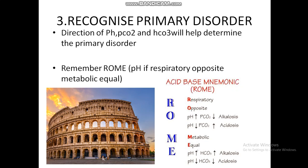In metabolic disorders, pH and HCO3 move in the same (equal) direction. If pH is high and HCO3 is high, it is metabolic alkalosis. If pH is low and HCO3 is low, it is metabolic acidosis. For example, pH 7.15 and HCO3 10 — both are low, moving in the same direction — indicates metabolic acidosis. Remember: ROME — Respiratory Opposite, Metabolic Equal.